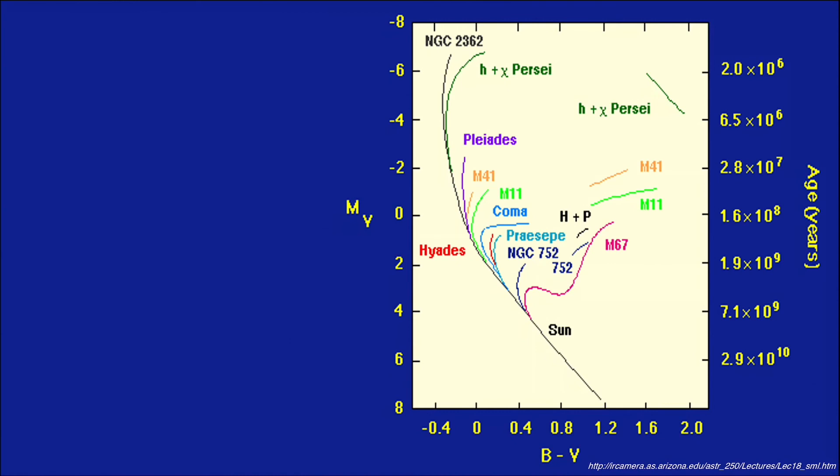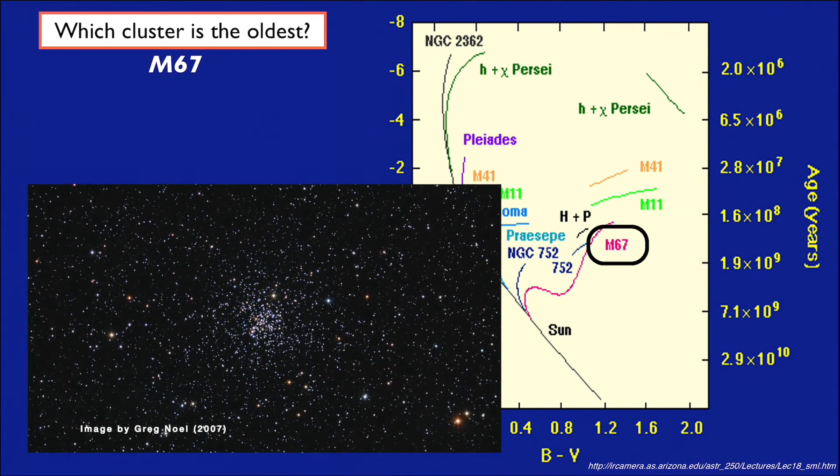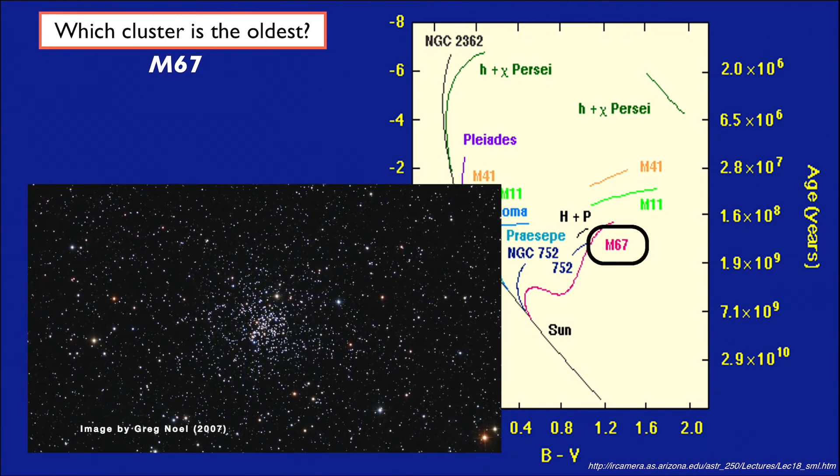Remembering what we just covered in the previous video, which star cluster would be the oldest? We're looking for the one with the turnoff point that's low on the main sequence, or as far to the right as possible, and that happens to be the star cluster M67 according to this particular HR diagram.